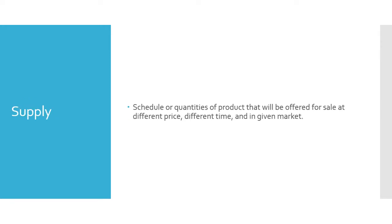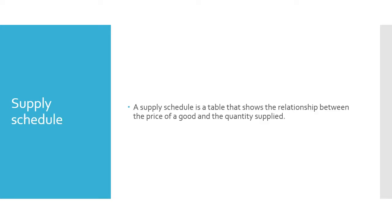Now we will look at supply. Supply describes the number of goods or services that all producers are ready to offer on the market at a given period and price. A supply schedule shows the quantities of a product that will be offered for sale at different prices, at different times, and in a given market. It is a table showing the relationship between the price of a good and the quantity supplied.